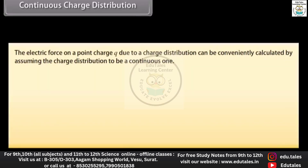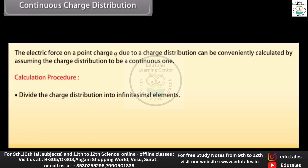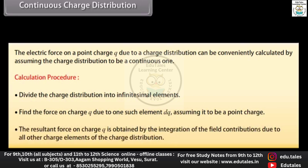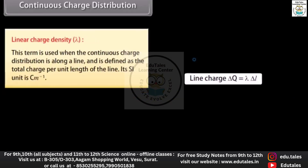Continuous charge distribution: the electric force on a point charge q due to a charge distribution can be conveniently calculated by assuming the charge distribution to be a continuous one. Divide the charge distribution into infinitesimal elements; find the force on charge q due to one such element dq assuming it to be a point charge; the resultant force is obtained by integration over all charge elements. Linear charge density λ is used when the distribution is along a line and is defined as the total charge per unit length; its SI unit is coulomb per metre.